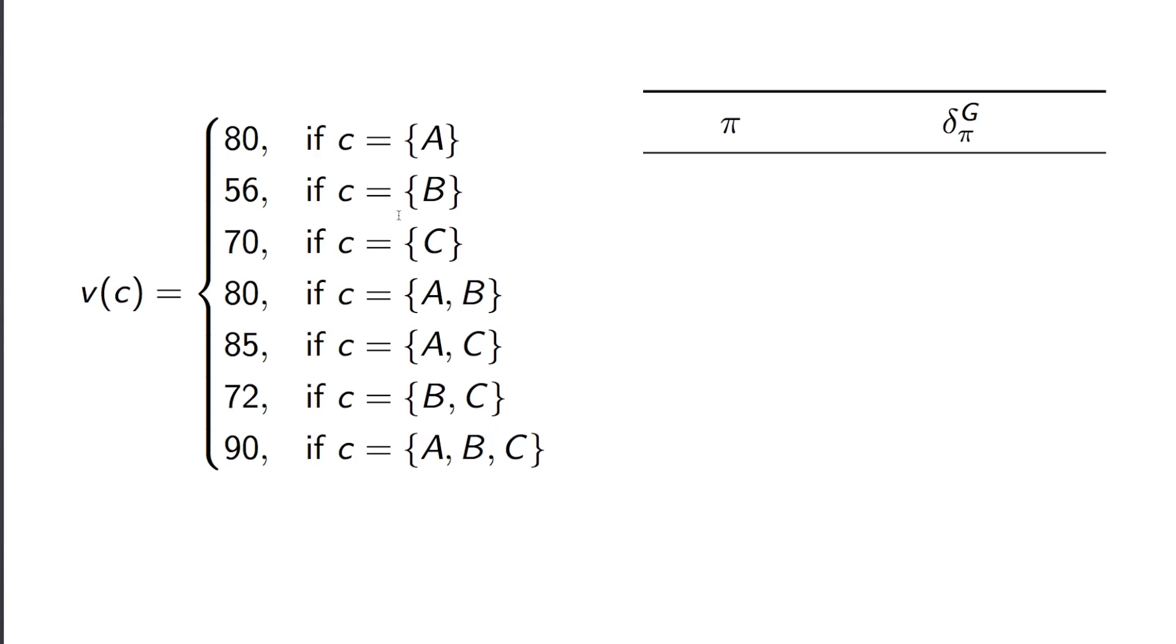So here we have a characteristic function. And now what we do is we consider every permutation of players. And we calculate the cost of each player as if they were paying the value of the grand coalition in turn.